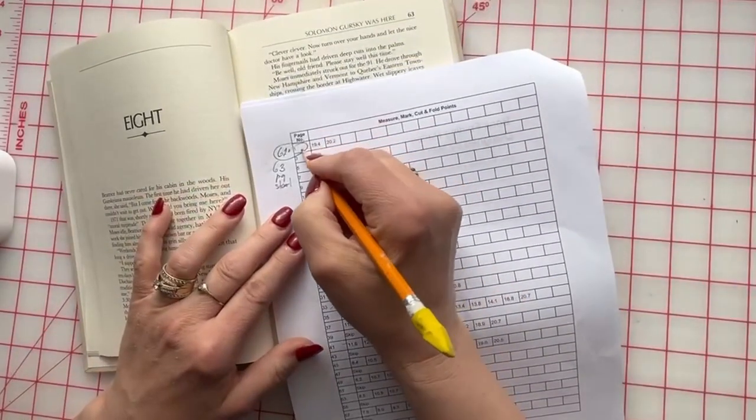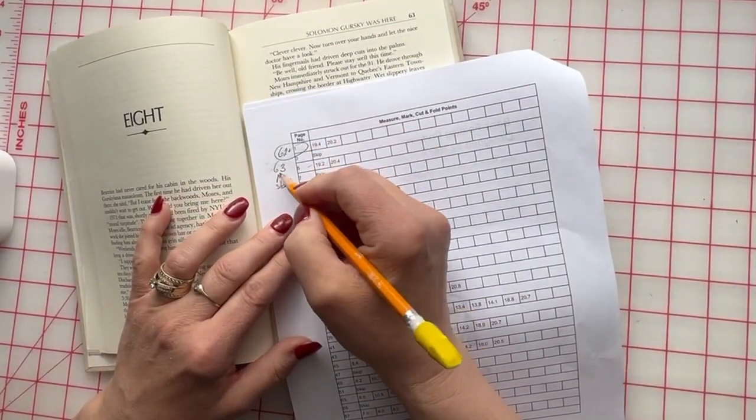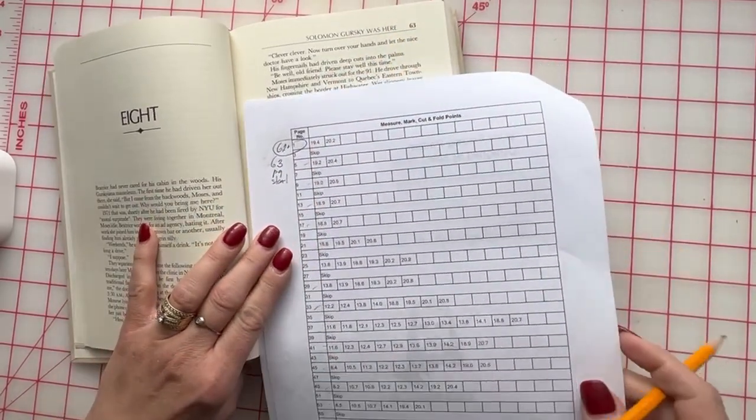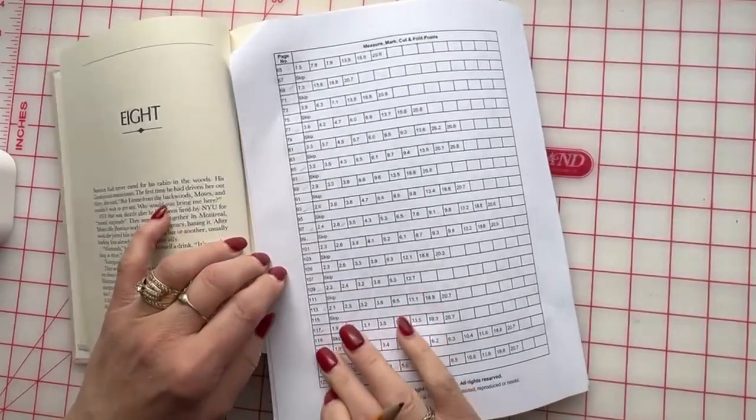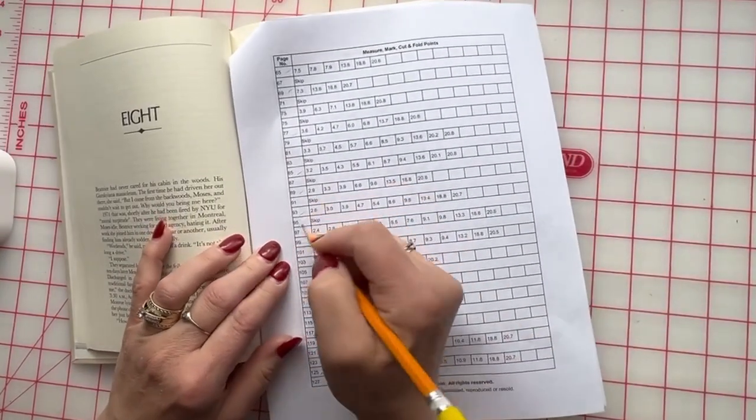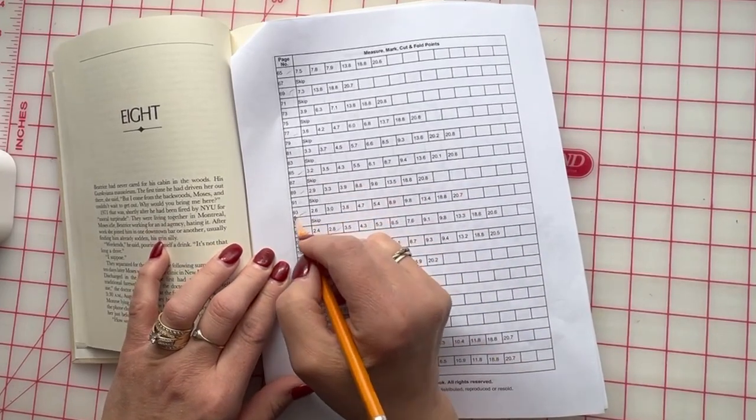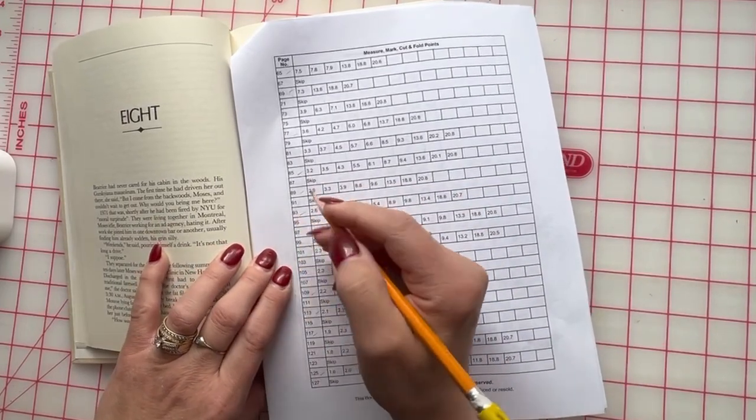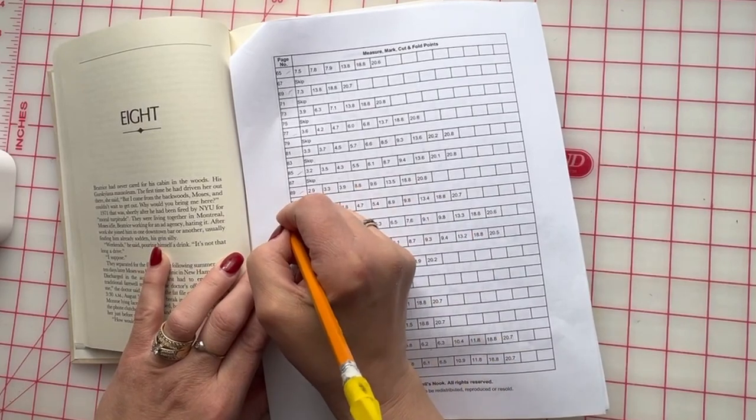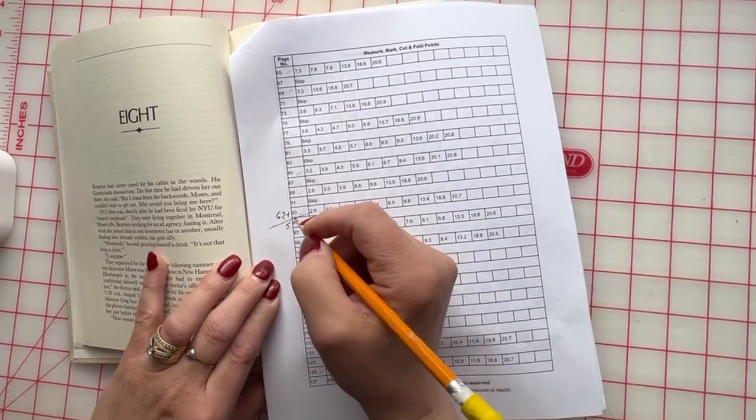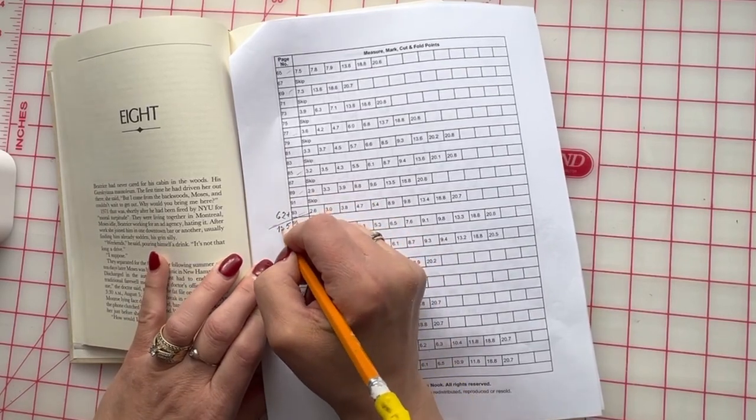So page one in my pattern will be page 63 in the book, in my book. So if I go somewhere else and I want to do pattern number on page 93, I will add 62 plus 93 and that all together will be 155.